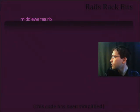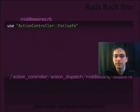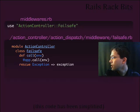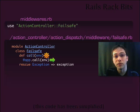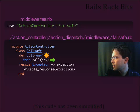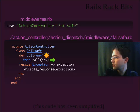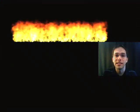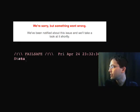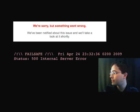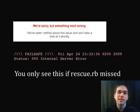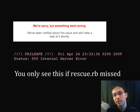Next up, we've got Failsafe. Looking inside failsafe.rb, there's the call definition and the call forward through the rest of the Rack middleware stack, and there's an exception handler. So basically, if an error happens somewhere in our Rack middleware stack or dispatching, it catches the exception and renders the failsafe response. If we're a client, we're going to see that dreaded page. In the console we'll see a failsafe error message. Keep in mind you only see this if rescue.rb is missed — so if all your normal Rails rescue methods fail, then you get this message instead.